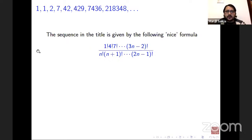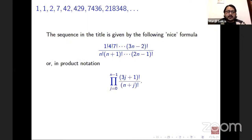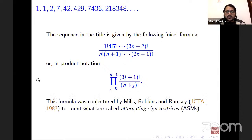The numerator and denominator are both products of factorials involving n. A nice formula in the sense that a combinatorialist likes would be something where you can write it as a product of factorials or sums of products of factorials. If you look at the small examples, the prime factors are very small in all of these cases. This formula was conjectured by Mills, Robbins, and Ramsey to count what are called alternating sign matrices.